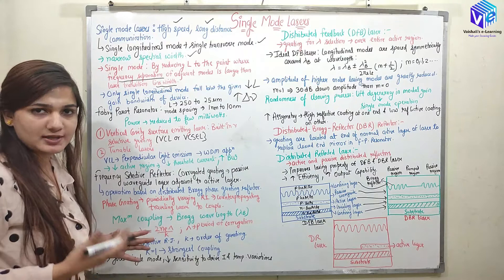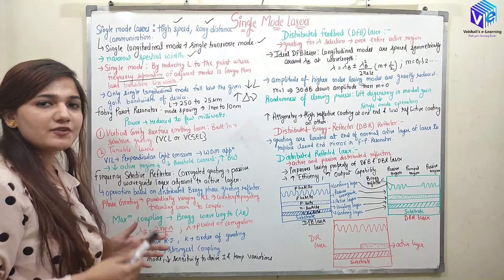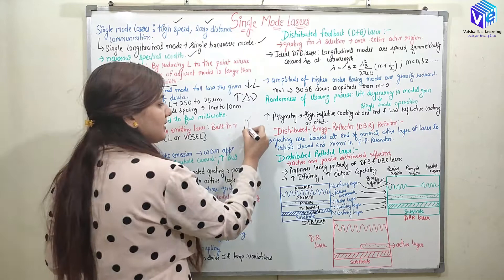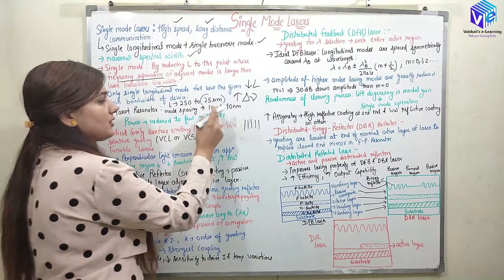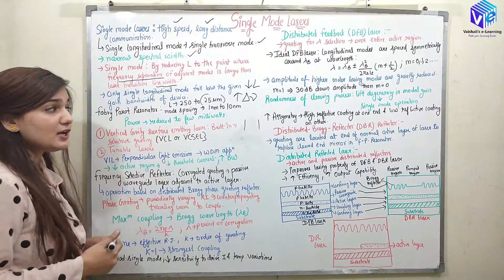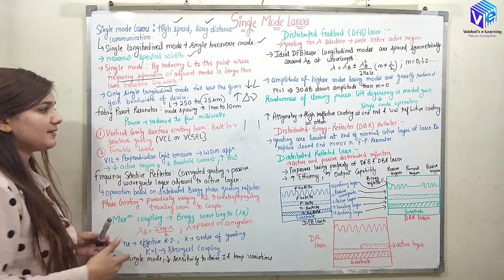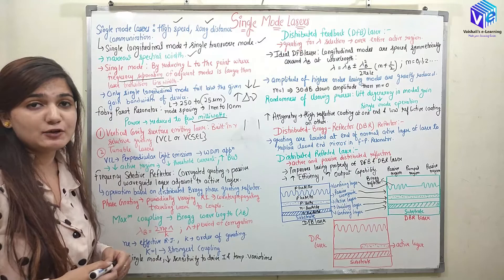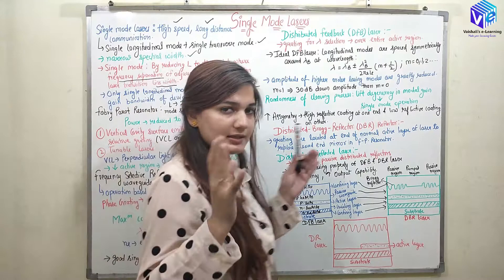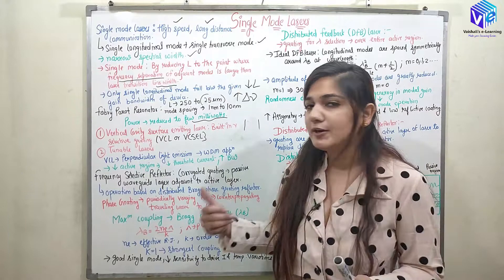Since we cannot decrease the length too much, we move towards alternate structures. One is the VCSEL — vertical cavity surface emitting laser. Here we have a vertical cavity that emits from the surface. We can also use tunable lasers, where only one frequency is selected and a mode along that frequency is achieved, giving single mode operation.